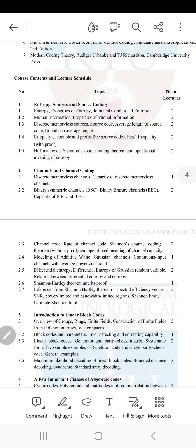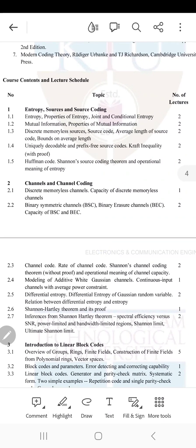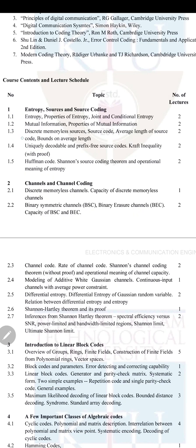First, we can discuss the first module. The first module is mainly divided into two sessions. The first session deals with what is information, what is entropy, the properties of entropy, and different types of entropy like marginal entropy, joint entropy, and conditional entropy, as well as mutual information and its properties.